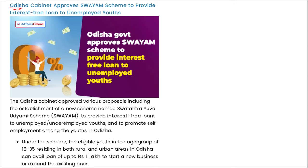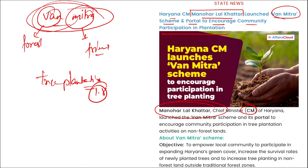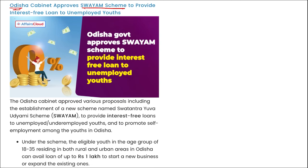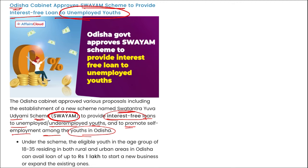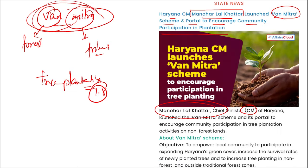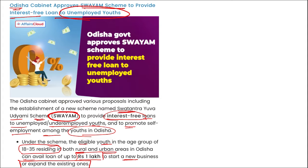Odisha's Cabinet approved the SWIM scheme. The SWIM scheme — Swantra Yuva Udyami scheme — is to provide interest-free loans to unemployed and underemployed youths and to promote self-employment among youth in Odisha. Under this scheme, eligible youth in the age group of 18 to 35 residing in both rural and urban areas of Odisha can avail a loan of up to Rs. 1 lakh to start a new business or expand existing ones.